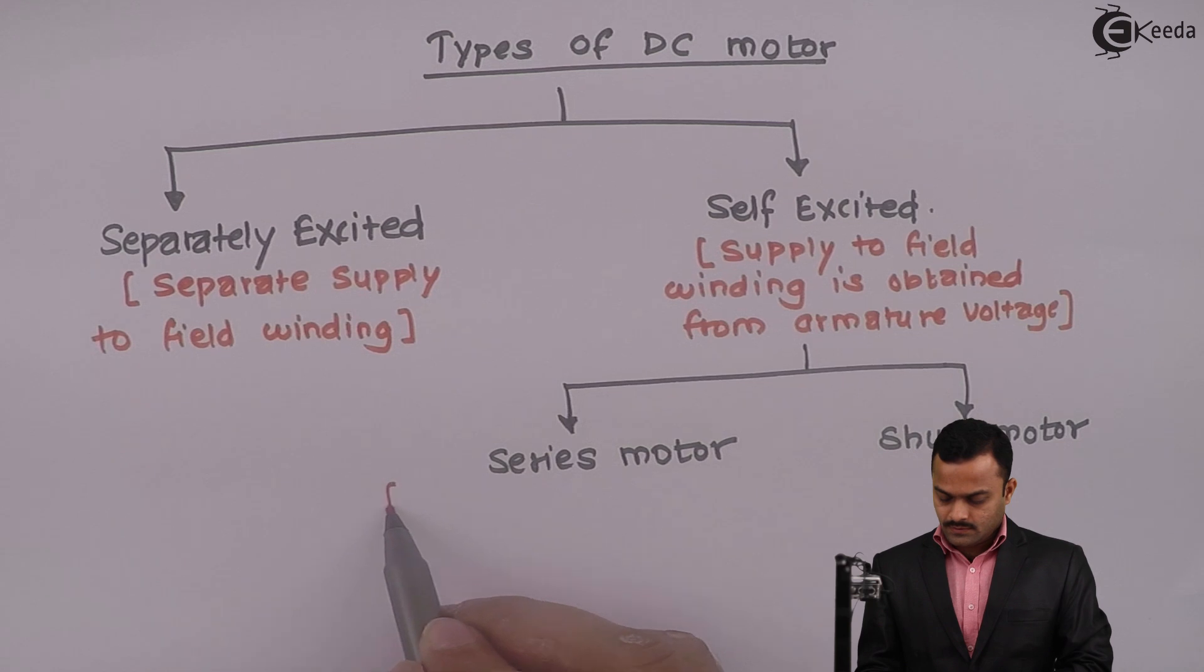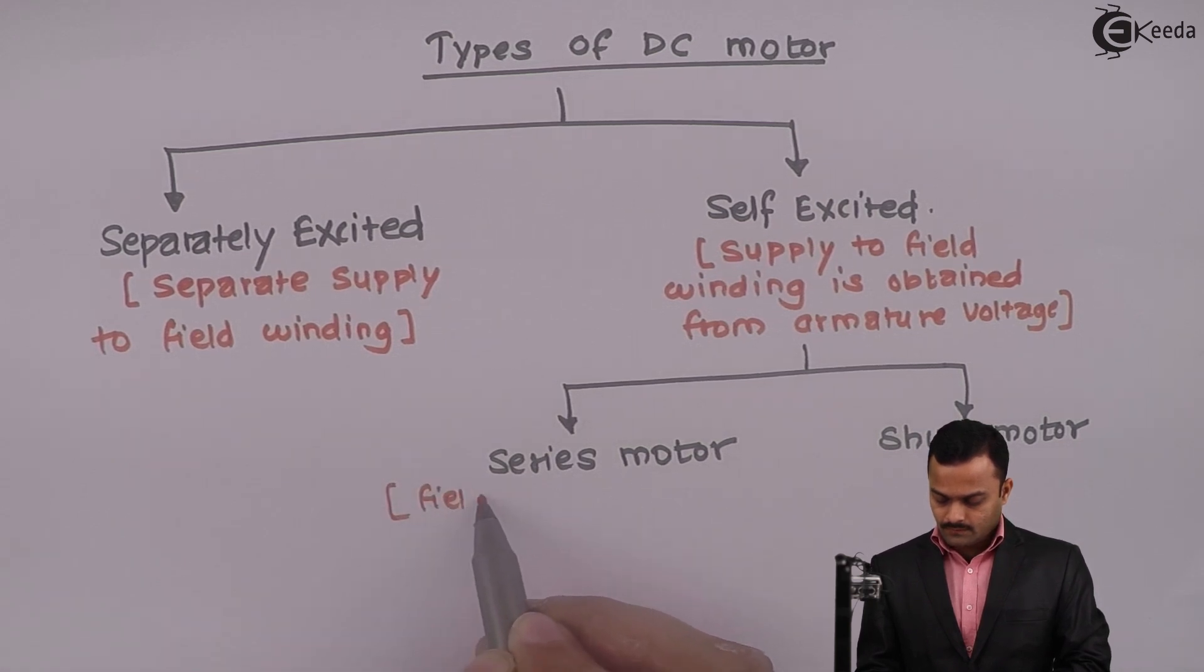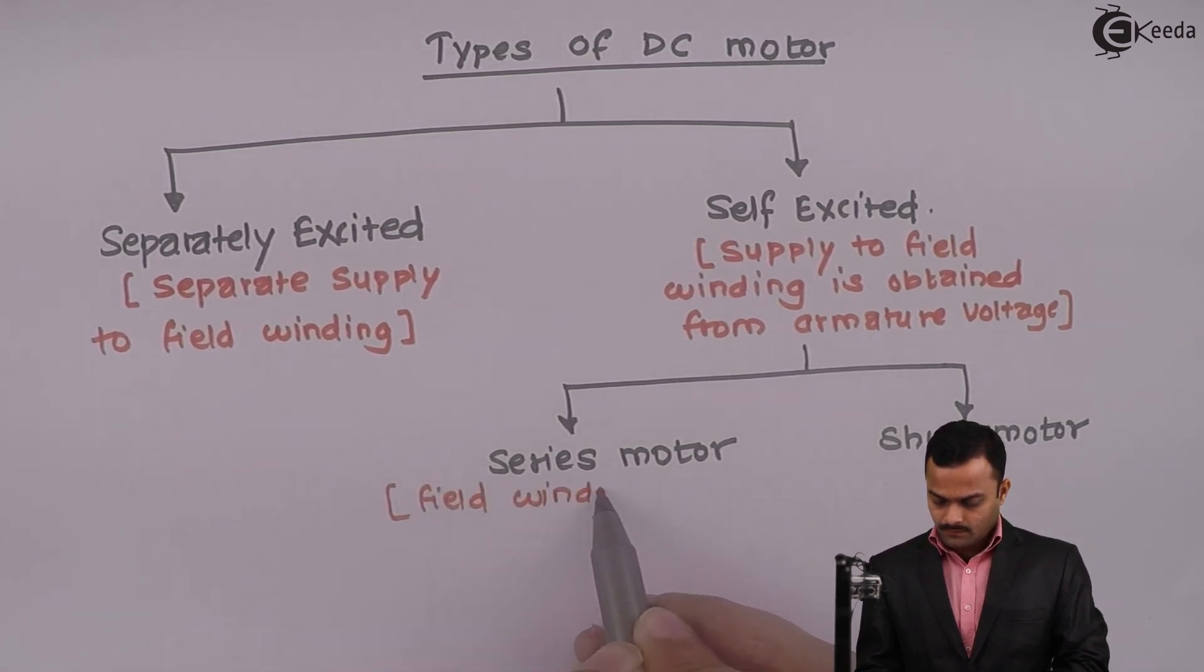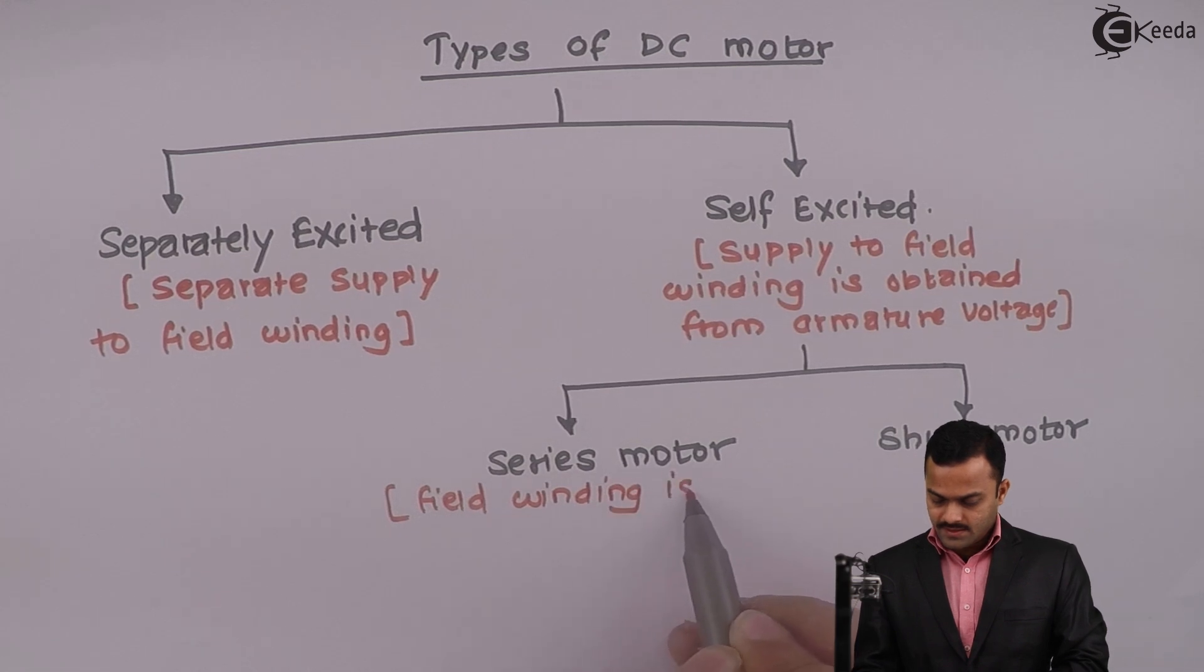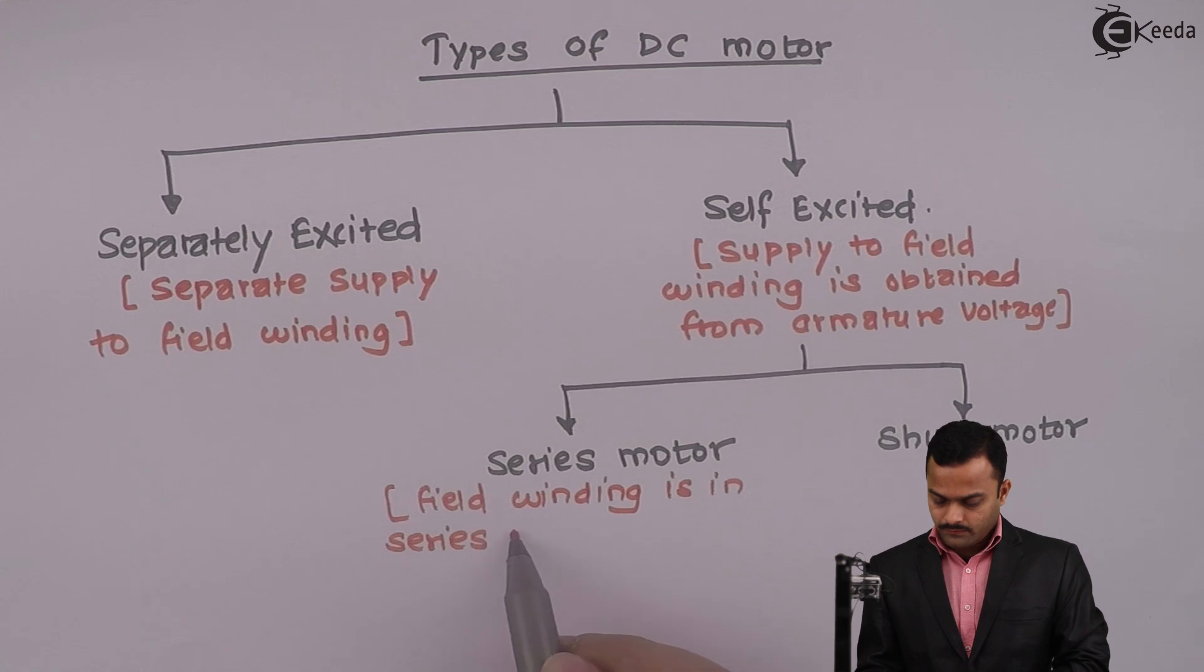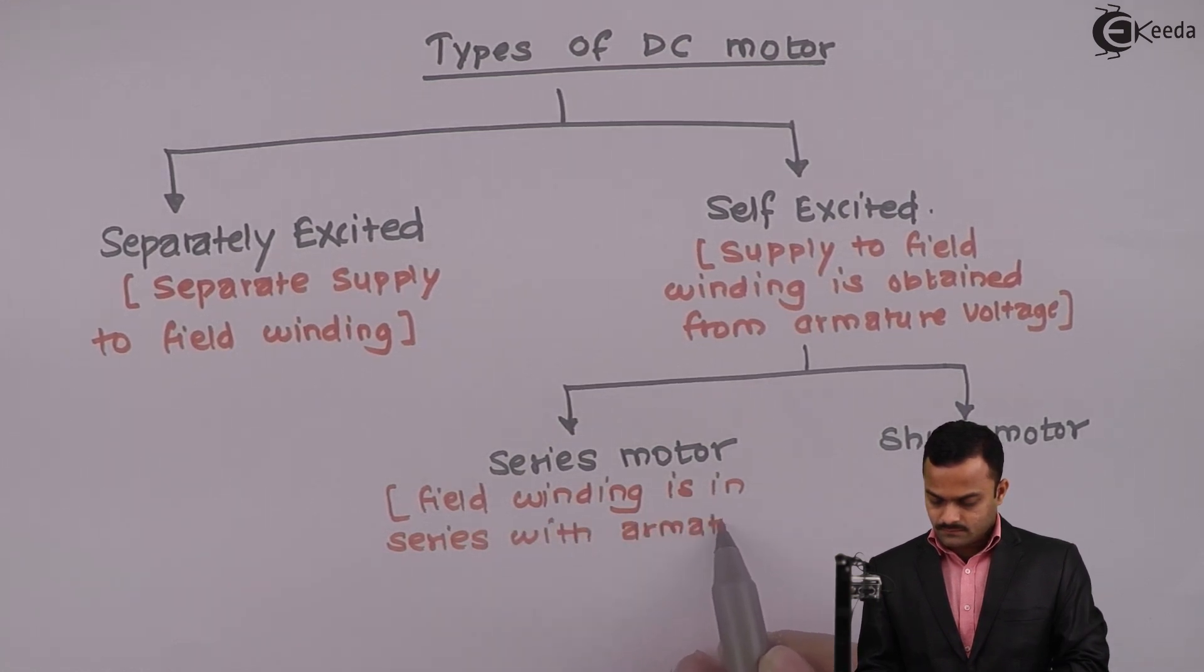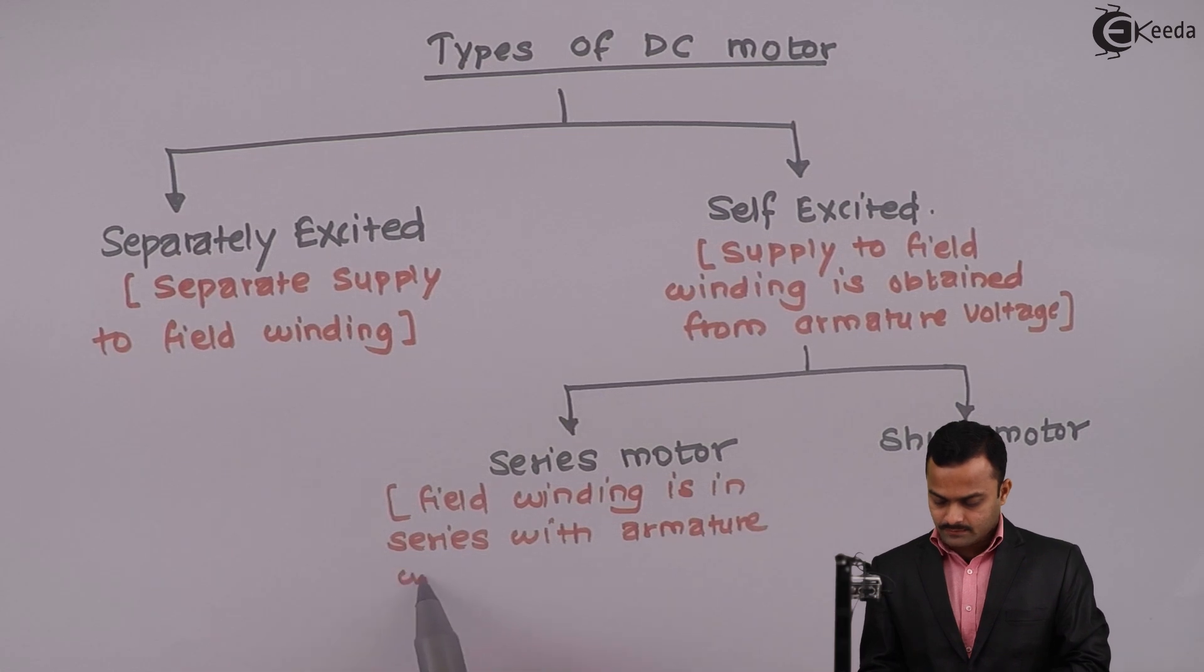Series motor field winding is in series with armature, or you can say armature winding.